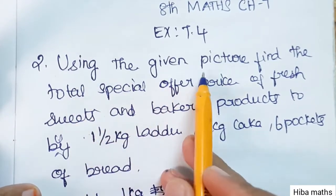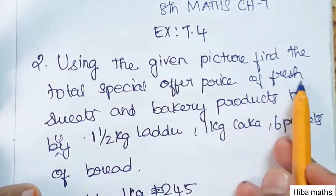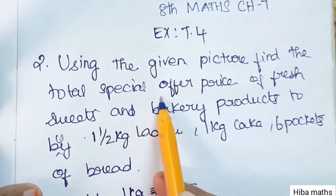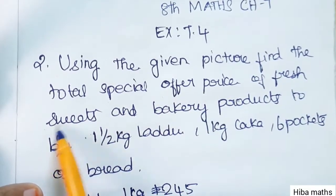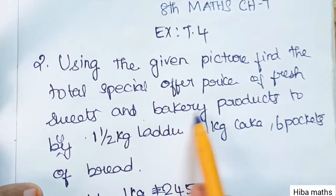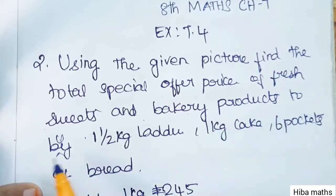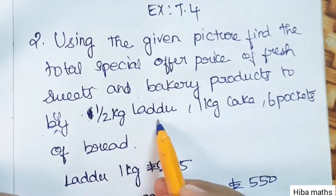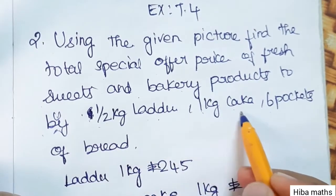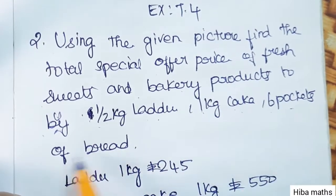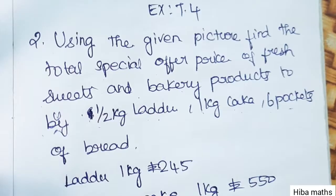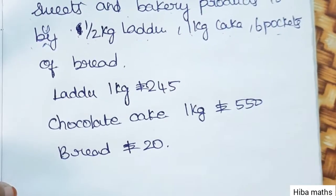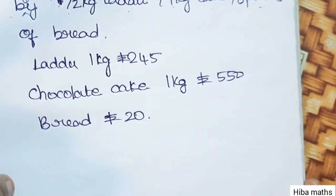Using the given picture, find the total special offer price of fresh sweets and bakery products. To buy 1.5 kg laddu, 1 kg cake, and 6 pockets of bread. Let's take a look at the diagram from the book.